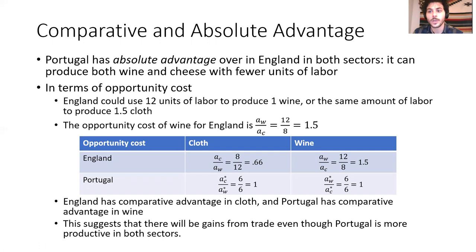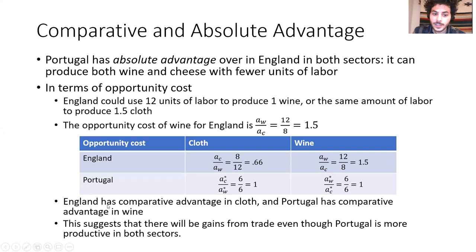Comparing these opportunity costs, cloth is relatively cheaper in England—getting an extra unit of cloth requires giving up fewer wine. Because the opportunity cost is lower, England has a comparative advantage in cloth, and Portugal similarly has a comparative advantage in wine. The price of wine in Portugal is only 1 cloth versus 1.5 cloth in England. Because of this comparative advantage, there will be gains from trade, even though Portugal is more productive in both sectors.